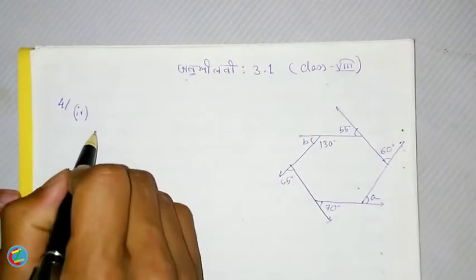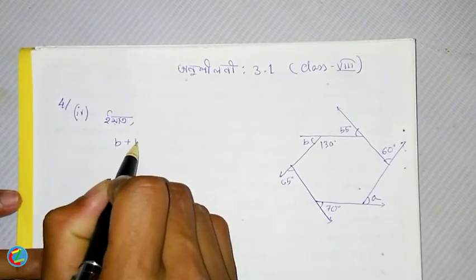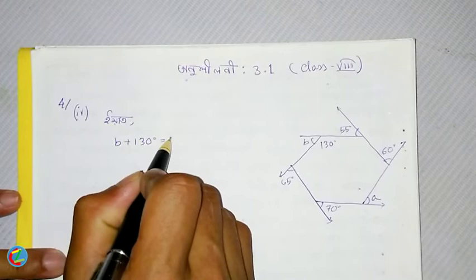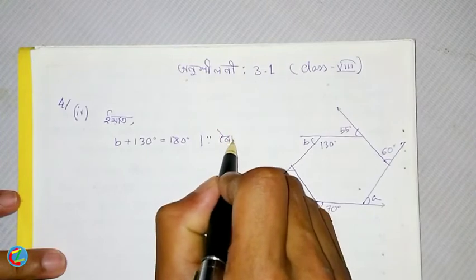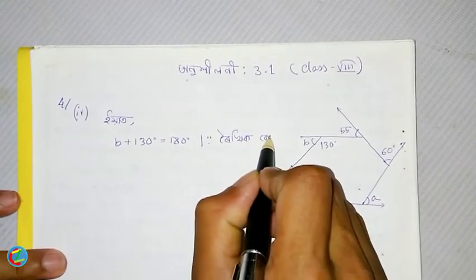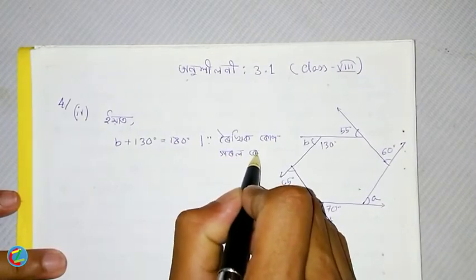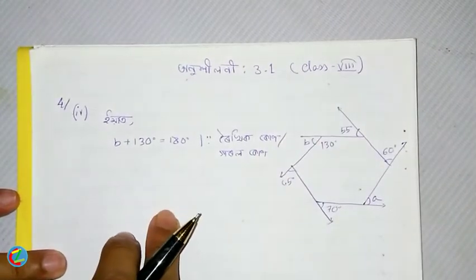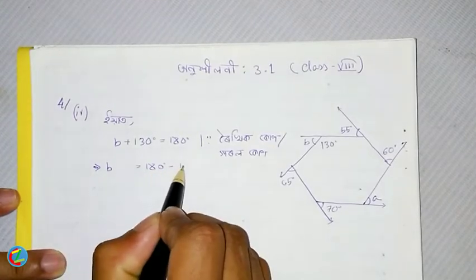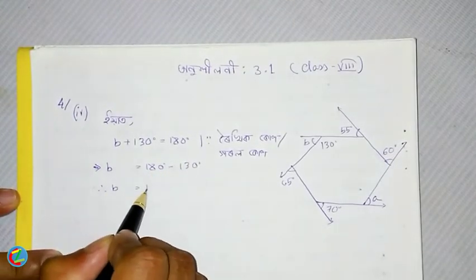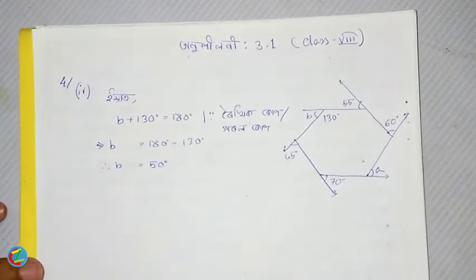So this work is going on. We will solve it for you. B plus 130 is equal to 180 degrees. So B is equal to 180 degrees minus 130 degrees, which gives us 50 degrees.